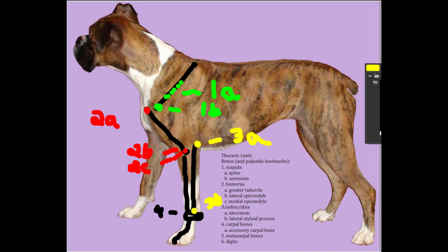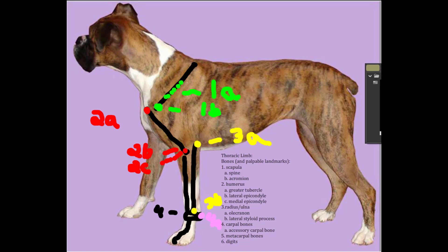For the carpal bones we'll focus on the accessory carpal bone, which is on the palmar lateral aspect of the carpus — labeled 4a, and it's also palpable. To finish off, you can easily palpate the metacarpal bones and the digits, so we'll outline those and think about how we can feel them and locate them in the live animal.